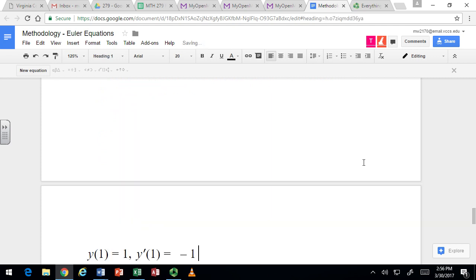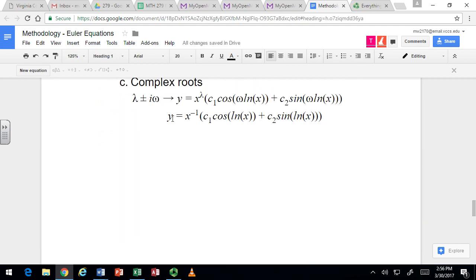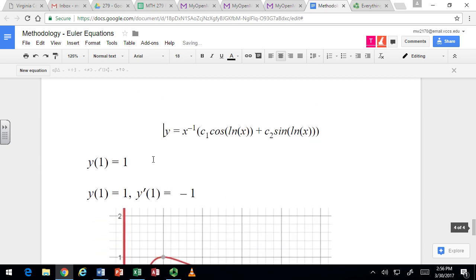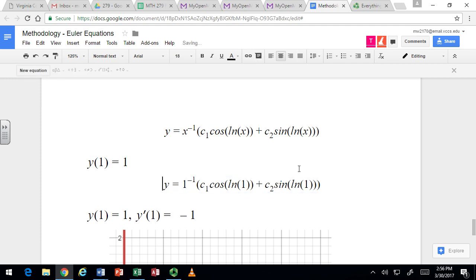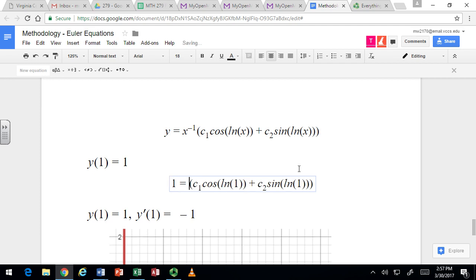So we find the values of the constants from the initial conditions in the usual way. So using the initial condition that when x is 1, y is 1, the equation would be pretty simple, right? Because natural log of 1 is 0. So you've got natural log of 1, natural log of 1, and then you've got 1 to the negative 1, and you've got 1. Alright. So 1 to the negative 1 is 1. That doesn't do anything. Natural log of 1 is 0. That's cosine of 0. Natural log of 1 is 0. That's sine of 0. Sine of 0 is 0, right? So that whole part goes away. And cosine of 0 is 1. So this tells you that c1 is 1.